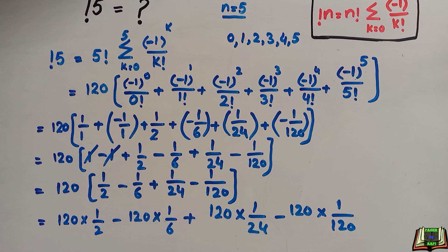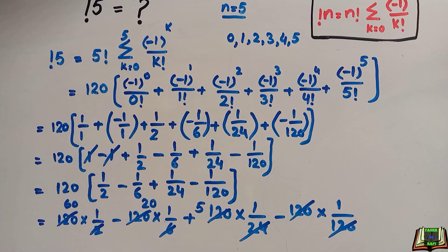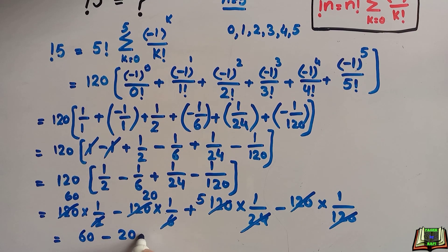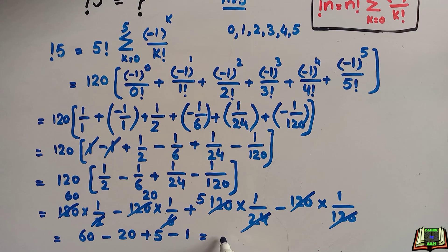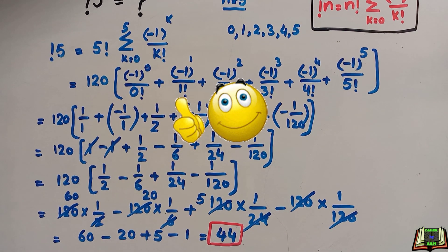Simplifying: 120 over 2 is 60, 120 over 6 is 20, 120 over 24 is 5, and 120 over 120 is 1. So we are left with 60 minus 20 plus 5 minus 1, which equals 44. This is the required answer: sub-factorial of 5 is 44. I hope all of you are clear. Don't forget to give a thumbs up and subscribe to this channel. Thanks for watching!